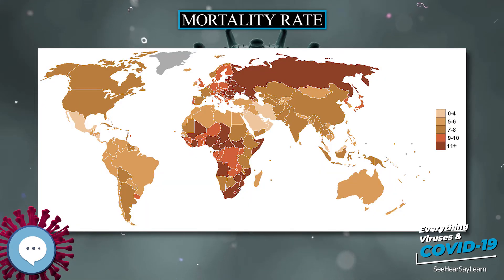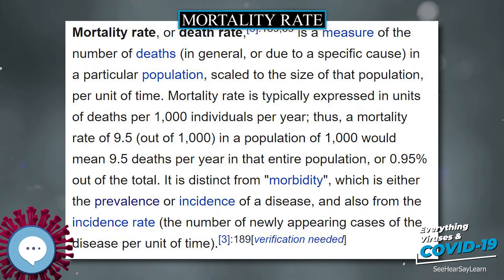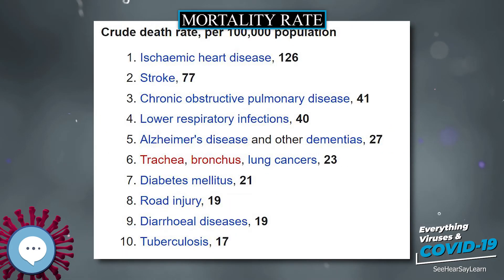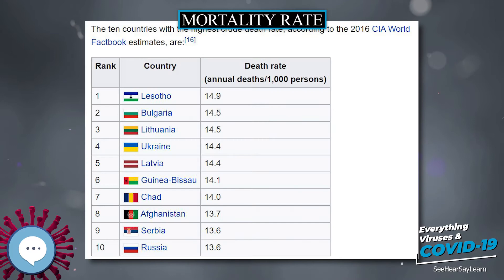Ideally, all mortality estimation would be done using vital statistics and census data. Census data provides detailed information about the population at risk of death, while vital statistics provide information about live births and deaths in the population. Often, either census data or vital statistics data is not available, especially in developing countries, conflict areas, regions affected by natural disasters, and other humanitarian crises.